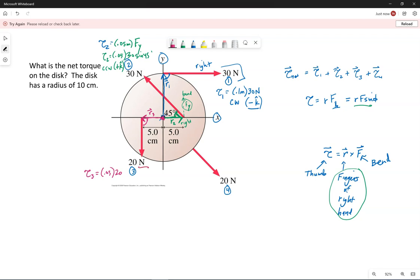This force would also make the disc rotate counterclockwise. Otherwise, following the right hand rule, if I point my fingers to the left and bend them down in the direction of that 20 newton force, my thumb points out at me, that's the positive k hat direction.